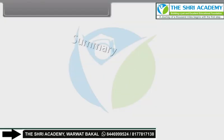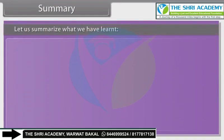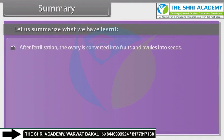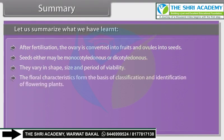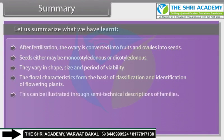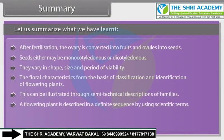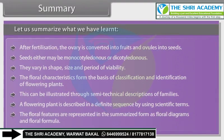Summary: After fertilization, the ovary is converted into fruits and ovules into seeds. Seeds may be either monocotyledonous or dicotyledonous; they vary in shape, size and period of viability. The floral characteristics form the basis of classification and identification of flowering plants, which can be illustrated through semi-technical descriptions of families. A flowering plant is described in a definite sequence using scientific terms, and the floral features are represented in summarized form as floral diagrams and floral formulae.